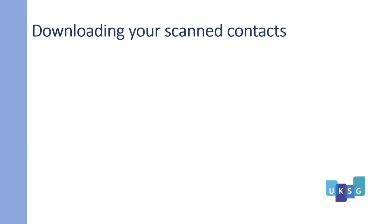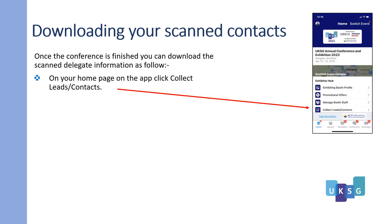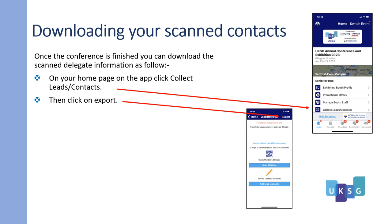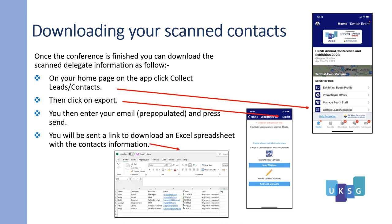How to download your scanned contacts. Once the conference is finished, you can download the scanned contact information as follows. On your home page on the app, click Collect Leads/Contacts, then click on Export. Then enter your email — which will be pre-populated — and press Send. You will be sent a link to download an Excel spreadsheet with the contact information.